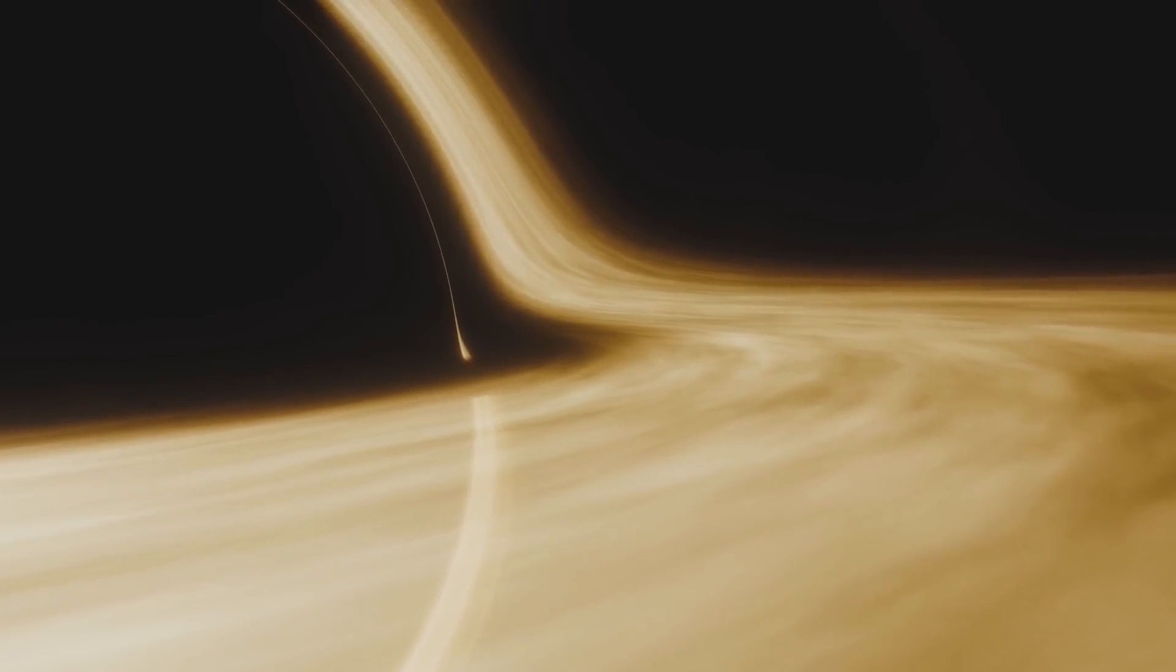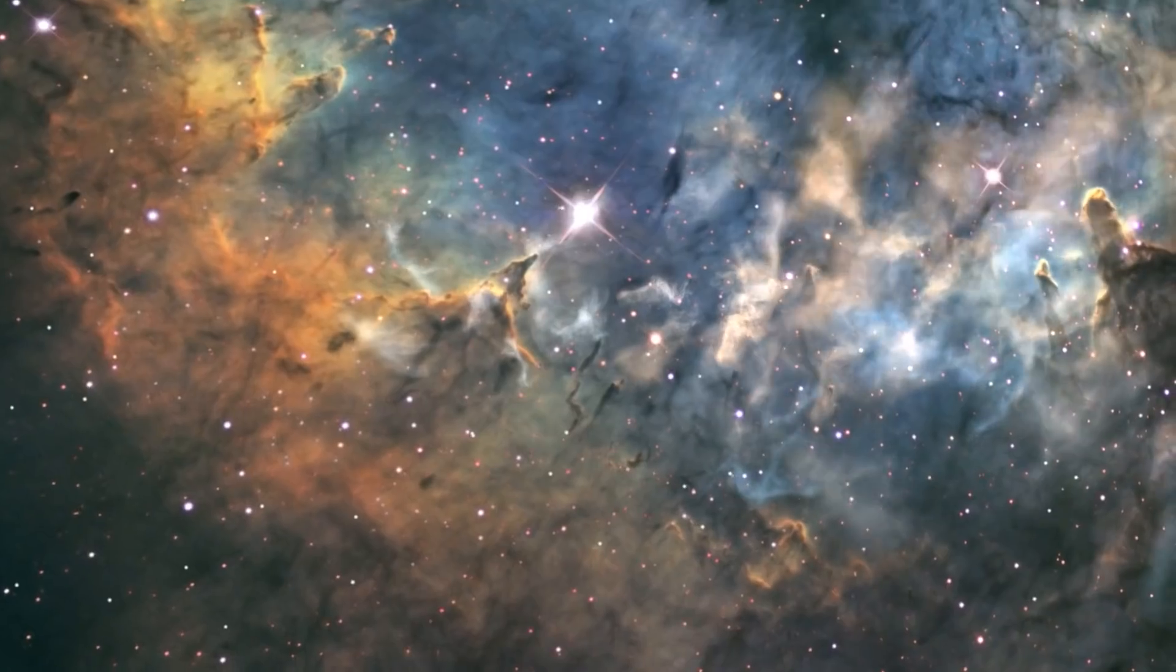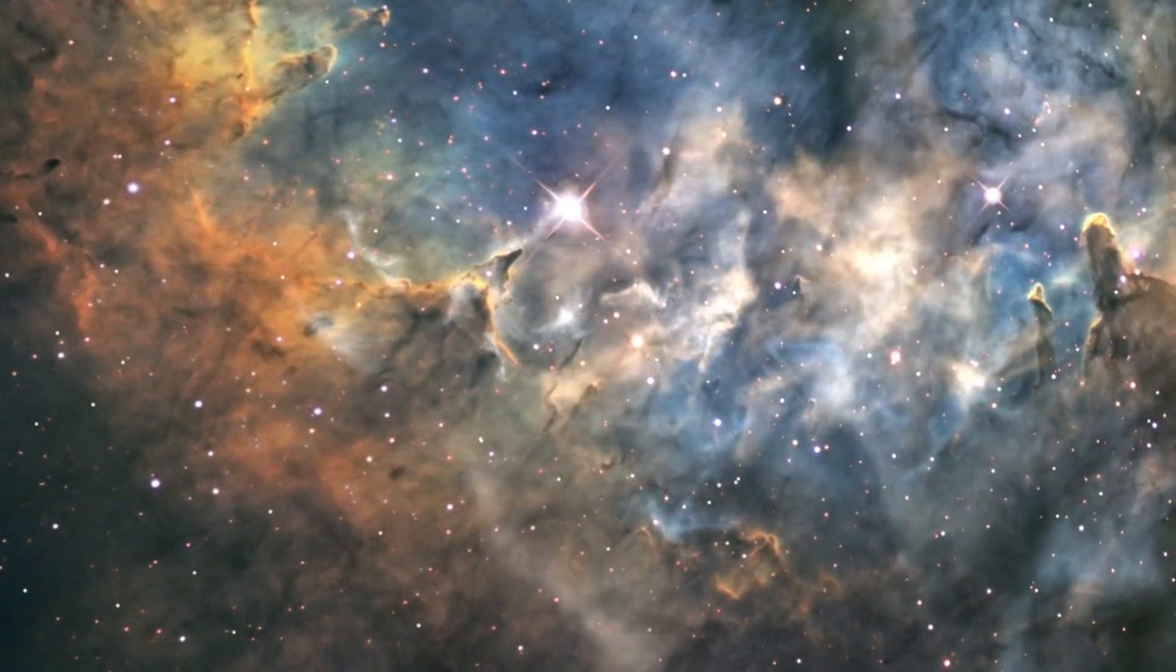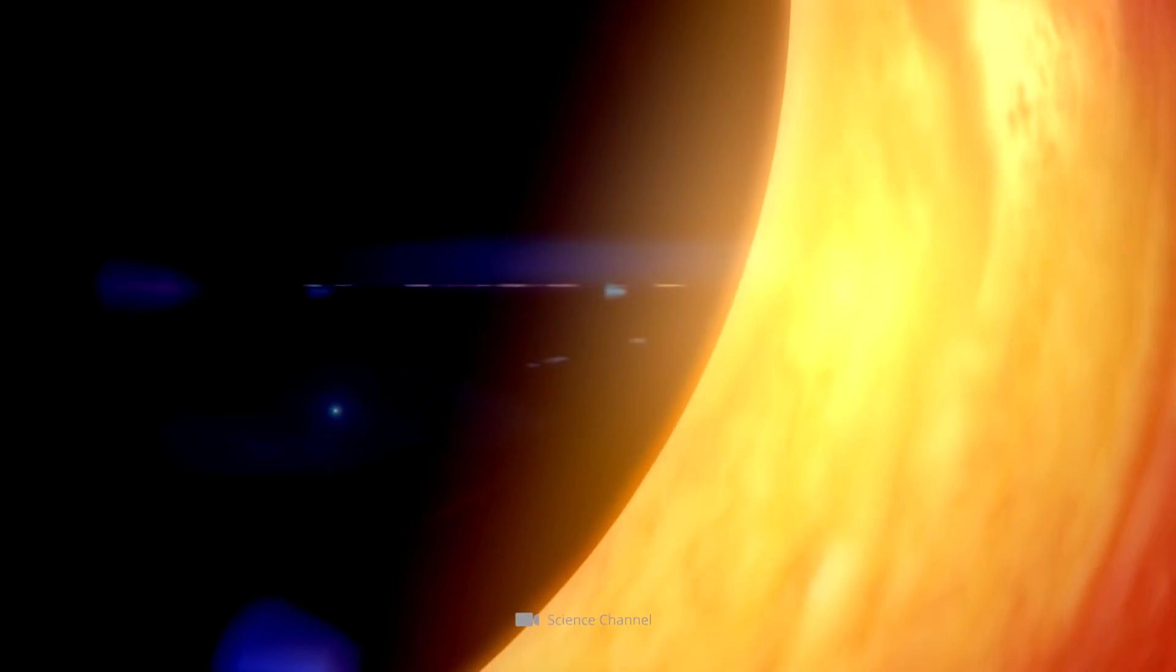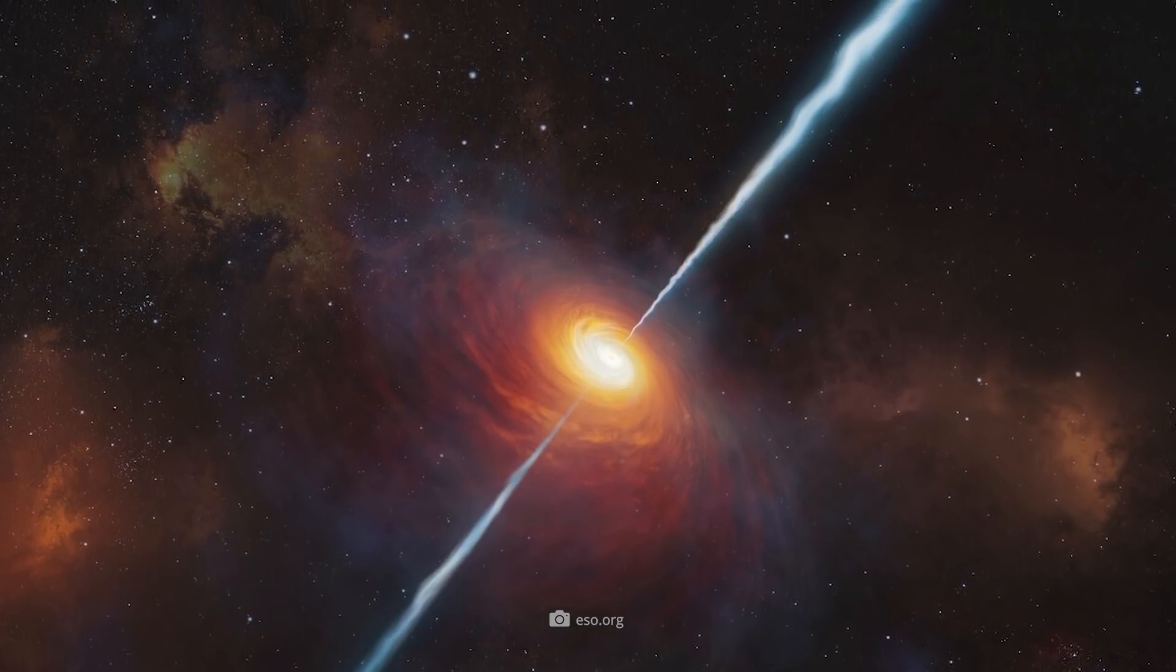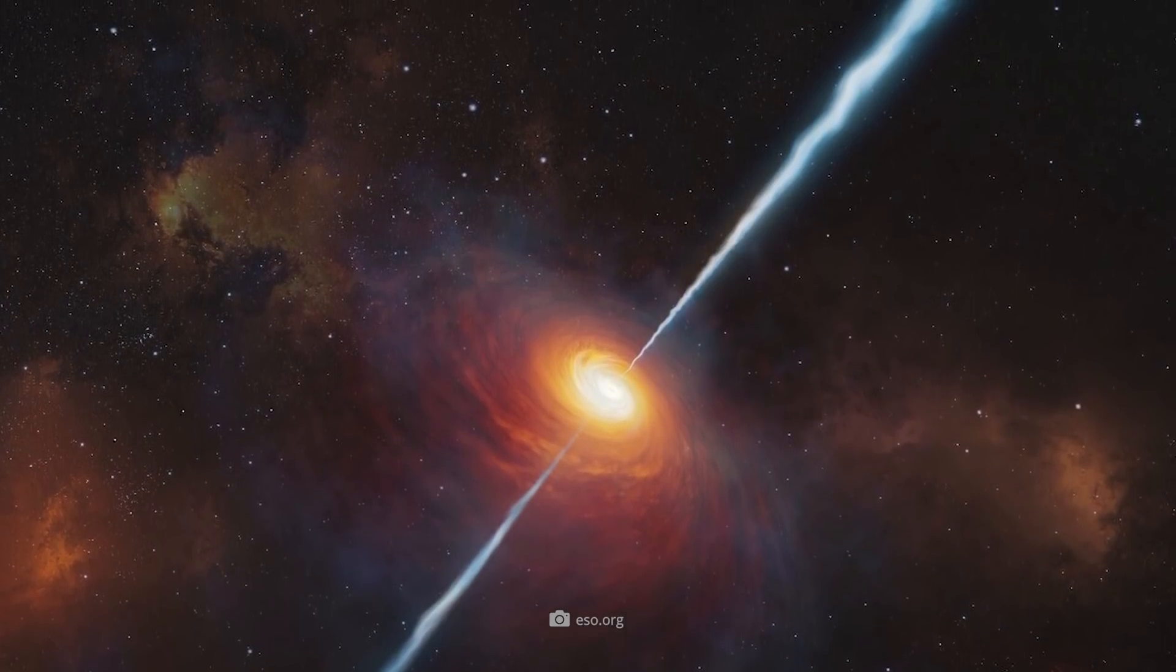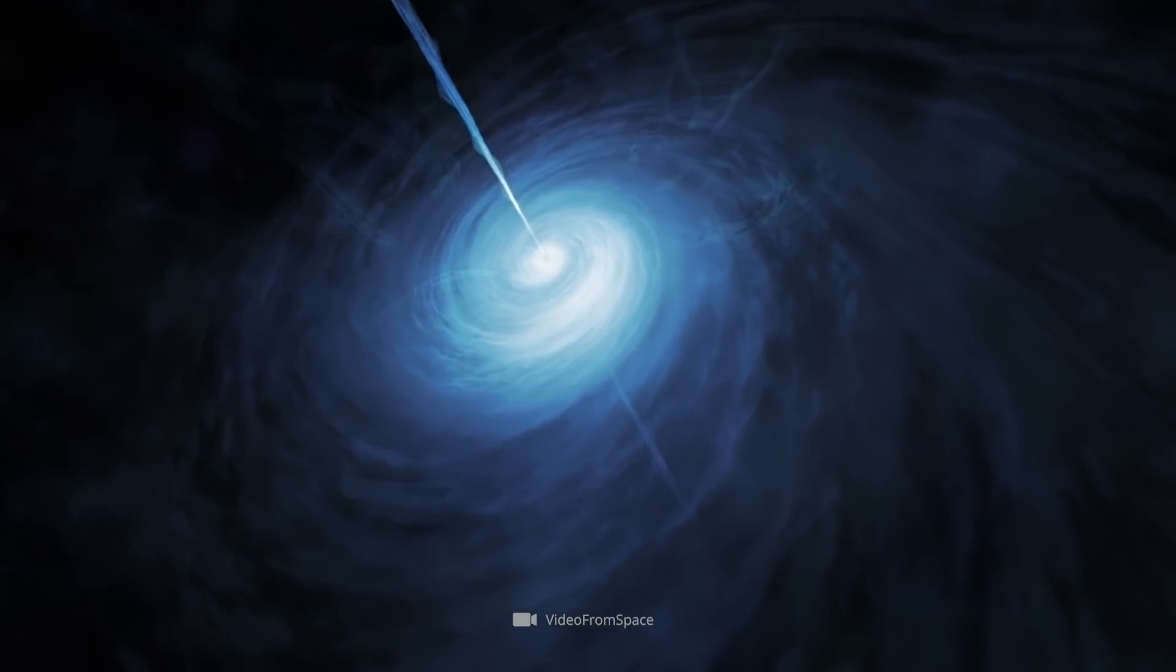As a reminder, an accretion disk is a rotating disk that is located around a central object. This disk incessantly transports matter in the direction of the center. Basically, accretion disks can consist of atomic gas, interstellar dust, or plasma. In the case of the black hole mentioned above, the swirling of gas and dust, which occurs at an enormous speed, creates immense friction.